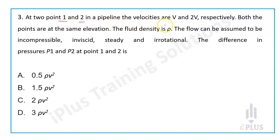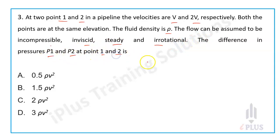Third question: At points 1 and 2 in a pipeline, the velocities are V and 2V respectively. Both points are at the same elevation. The fluid density is rho. The flow can be assumed to be incompressible, inviscid, steady, and irrotational. Find the difference in pressures P1 and P2. Options: A — 0.5 rho V square, B — 1.5 rho V square, C — 2 rho V square, D — 3 rho V square.